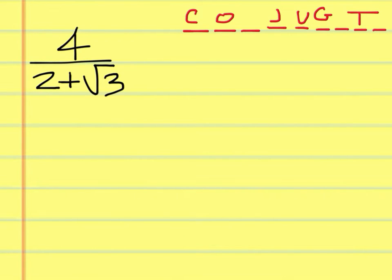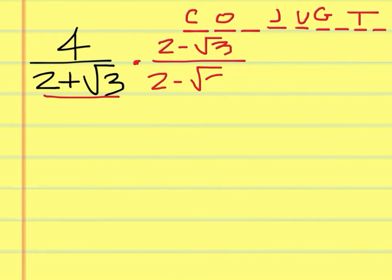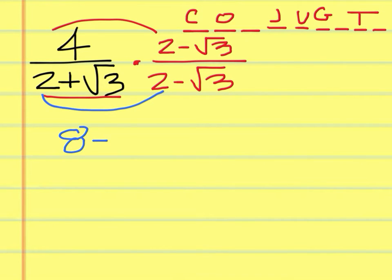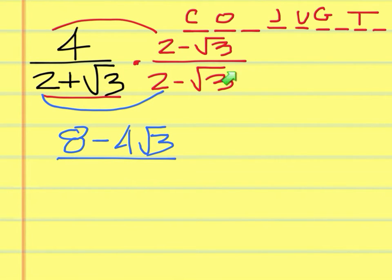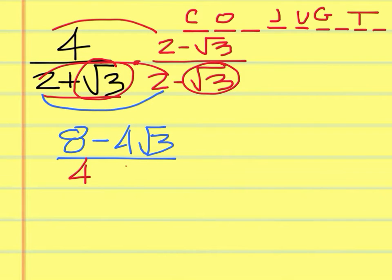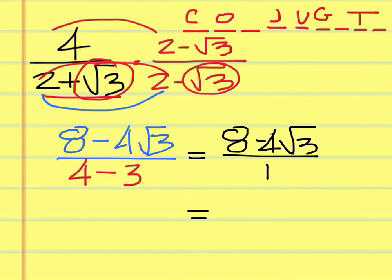We set up the conjugate and that's going to be multiplying the top and the bottom by 2 minus the square root of 3, top and bottom. When I multiply across the top, we come up with 8 minus 4 square root of 3. On the bottom, you multiply this times this and then this times this: 2 times 2 is 4, and square root of 3 times square root of 3 is 3, with a minus sign in there. So on the bottom you'll have a 1 — no need to write the 1. There's your answer.